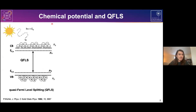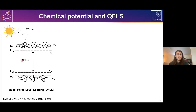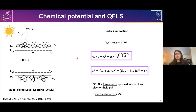As you all know, when we have a semiconductor under illumination, we have photogeneration of free electrons in the conduction band and free holes in the valence band. This carrier population cannot be described anymore by one Fermi level, but we need to describe them using a quasi-Fermi level for electrons and a quasi-Fermi level for holes. The splitting of these two levels is what we call quasi-Fermi level splitting, and this is an essential quantity to assess the quality of our semiconductor.